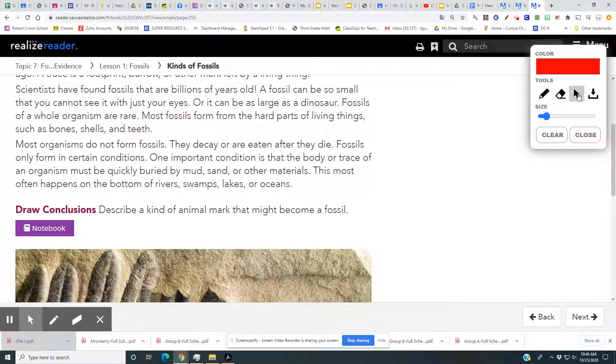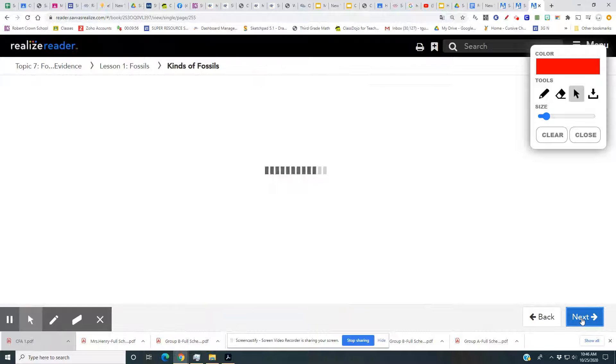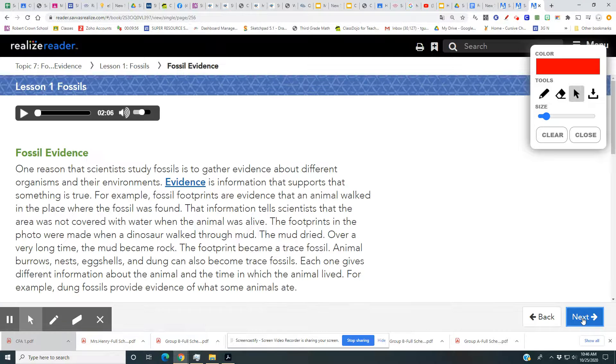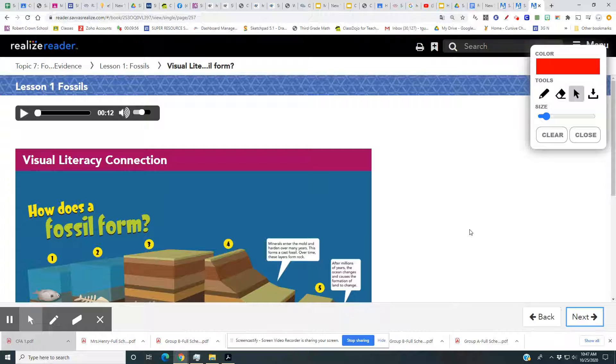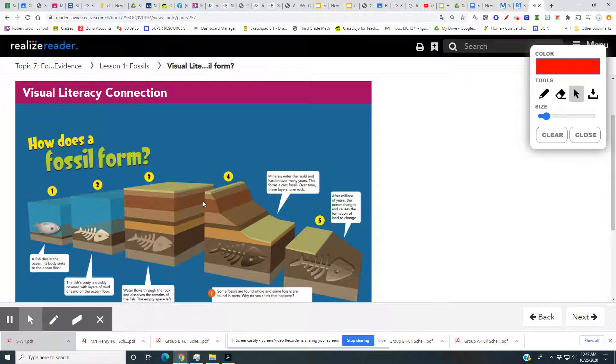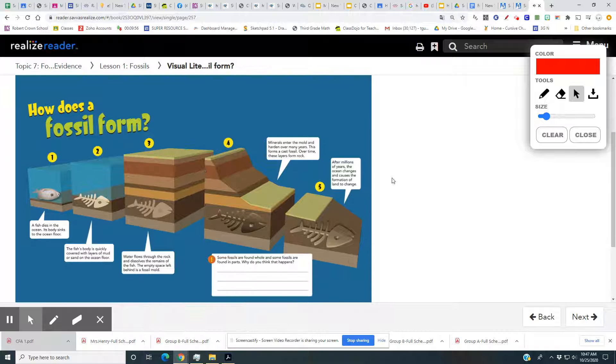Okay, now I'd like you to go ahead and turn to page 262 and 263. How does a fossil form? Visual literacy connection. Some fossils are found whole and some fossils are found in parts. Why do you think that happens?